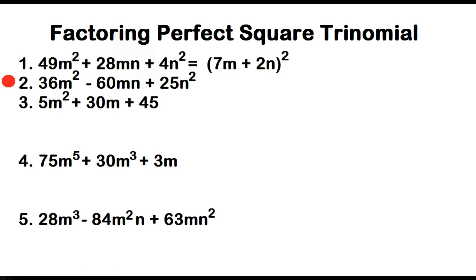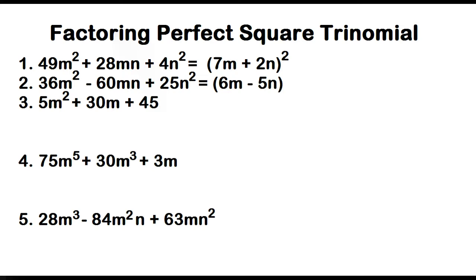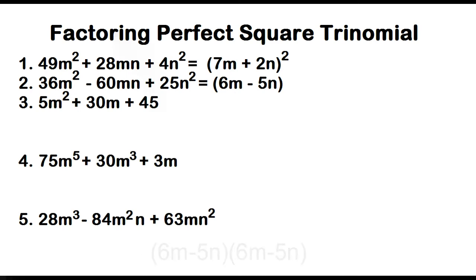Example number two: 36m squared minus 60mn plus 25n squared. Take note of the minus sign between the first term and the third term. The square root of 36m squared is 6m, and the square root of 25n squared is 5n. The factors are 6m minus 5n and 6m minus 5n, or the square of the quantity 6m minus 5n.